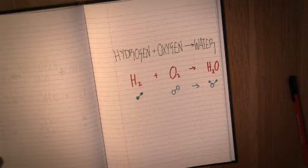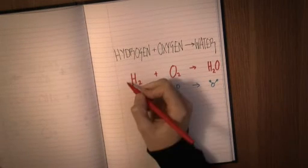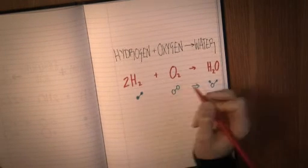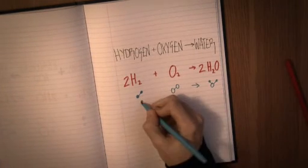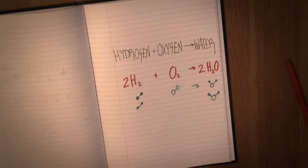Now, we're going to have to increase the number of oxygens we finish with. Let's put a two in front of the H2O, and that'll mean that to balance that, we have to put a two in front of the H2 on the left-hand side. That gives us 2H2 plus O2 goes to 2H2O.